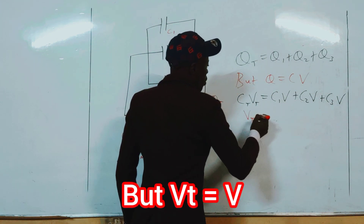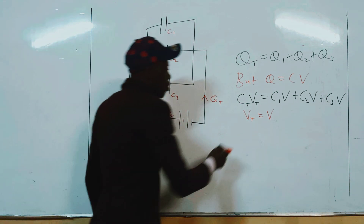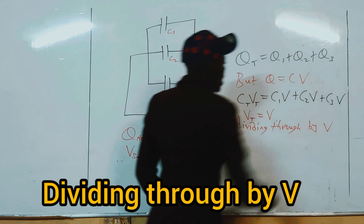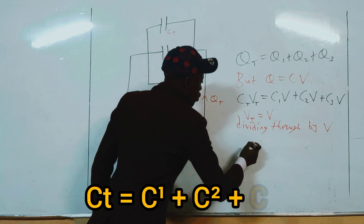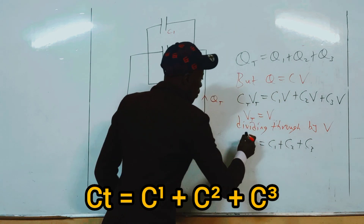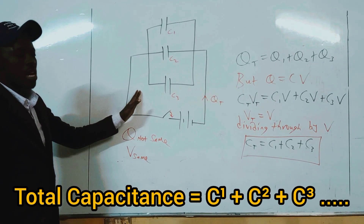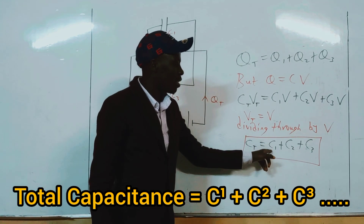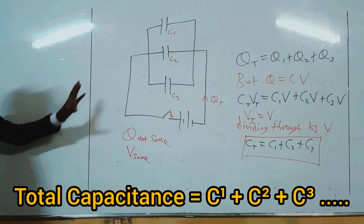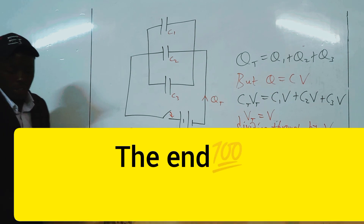Since total voltage VT equals V — because voltage across each capacitor equals the total voltage in parallel — we divide through by V. This gives us CT = C1 + C2 + C3. So the total capacitance for capacitors in parallel is simply the sum of the individual capacitances. You form an equation of what is not the same, and that's how you get the total capacitance.